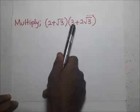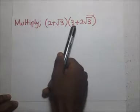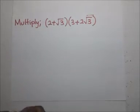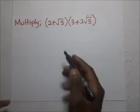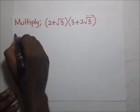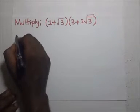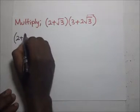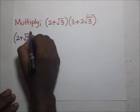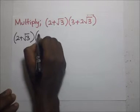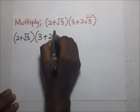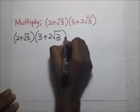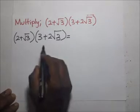We are having (2 + √3) times (3 + 2√3). We are multiplying these two brackets, so of course we are going to open them. This means that (2 + √3) into (3 + 2√3) is going to be equal to...